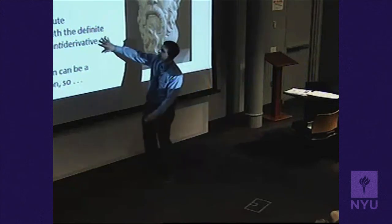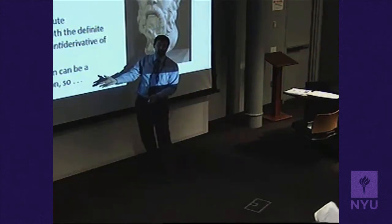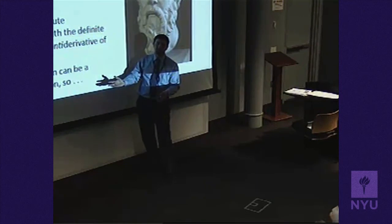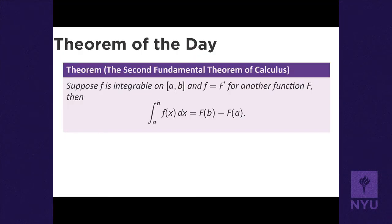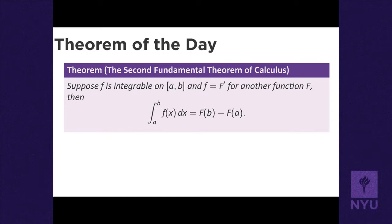This isn't specific to velocity problems — any function can be considered the velocity of something. This leads to the Second Fundamental Theorem of Calculus: if you have an integrable function f and can find an antiderivative F (where F' = f), then ∫ₐᵇ f(x)dx = F(b) - F(a). You evaluate the antiderivative at b and subtract its value at a.